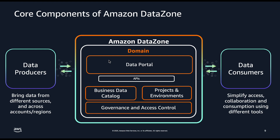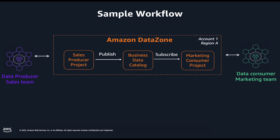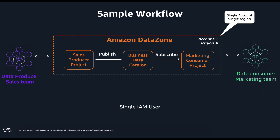Now that we have some idea about the core components of DataZone, let's explore the sample workflow we will implement. We will implement a simple end-to-end workflow where a marketing team is looking to access and analyze sales data. The marketing team is the data consumer in this scenario, and the sales team will make this data available by publishing an AWS Glue table called Catalog Sales to the Business Data Catalog. To keep things simple, we will limit this implementation to a single AWS account, a single region, and a single IAM user who will act as both the data producer and the data consumer.